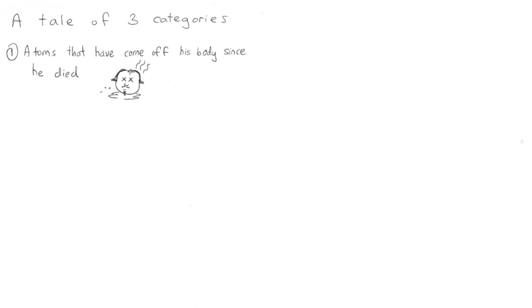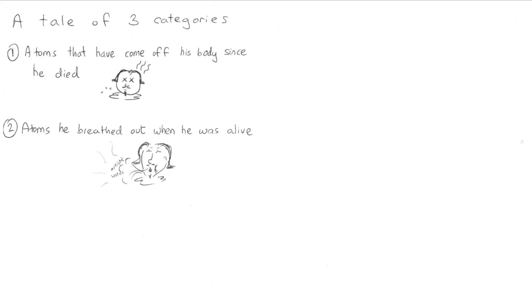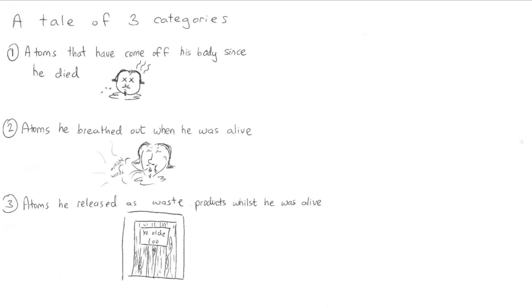Firstly, how many atoms are there in the environment that have touched Shakespeare? When considering his atoms, the team at Jupiter Scientific split them into three categories. The first category is atoms that have come off his body since he died — things like liquids that might have evaporated from him, or bits of skin that might have come off before he got buried. The other two categories make up the majority of Shakespearean atoms: atoms he breathed out while he was alive, and atoms that he released in the form of waste products.